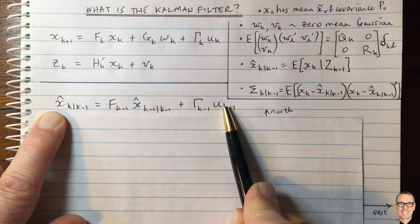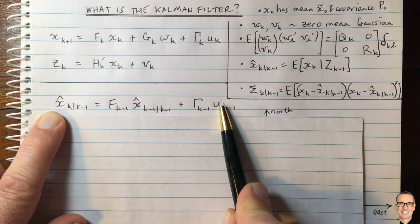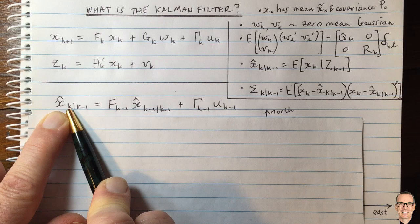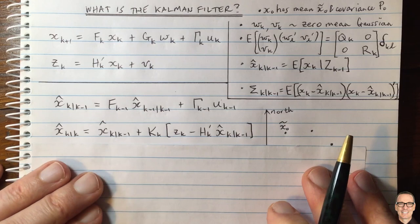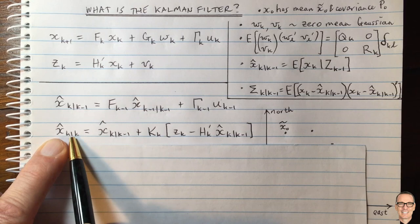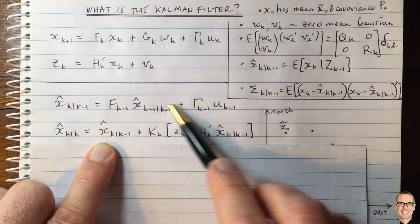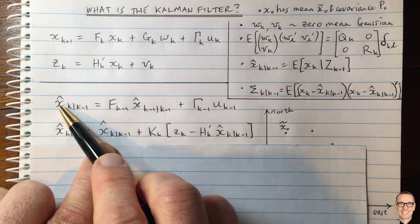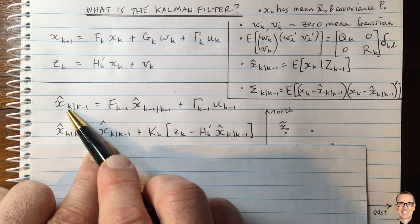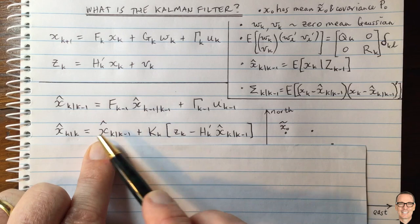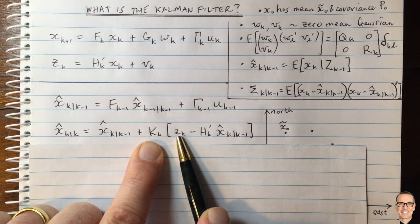Then we can ask: how do we update that estimate once we do take a measurement at time K? The next Kalman equation gives the estimate at time K given that we've taken a measurement at time K. Not surprisingly, that equals the predicted state we just worked out before taking the measurement at time K — the best we could do at predicting without yet having that measurement — and then we modify it by adding a term which depends on the measurement at time K.